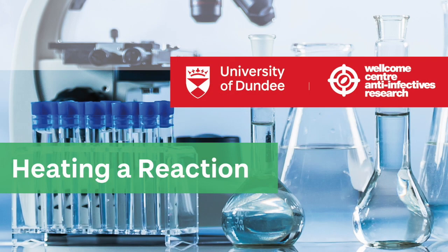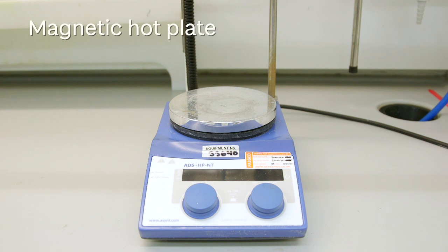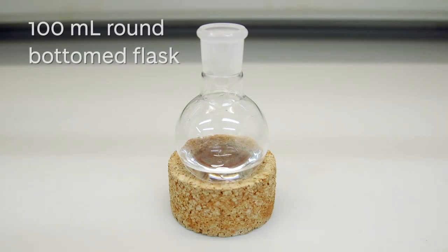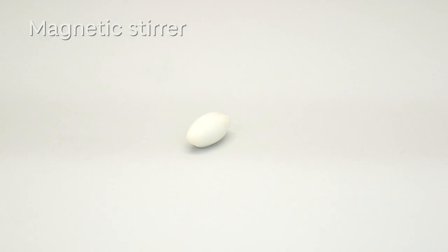We are going to go through how to heat a reaction on a magnetic hot plate. For this we are going to need a magnetic hot plate, a 100 ml round bottom flask, a magnetic stirrer,